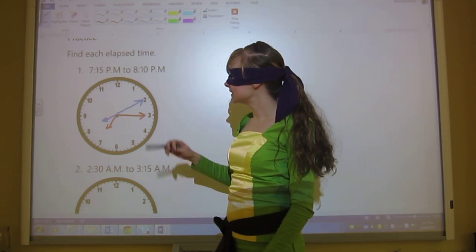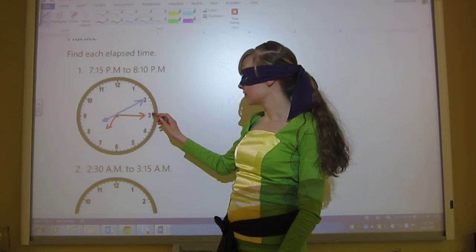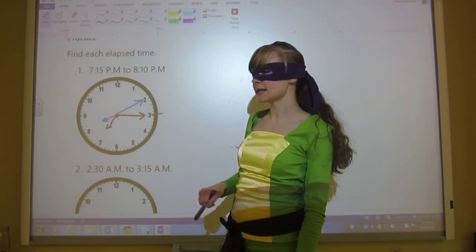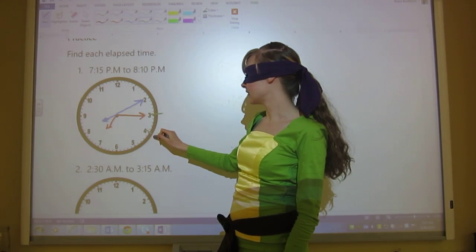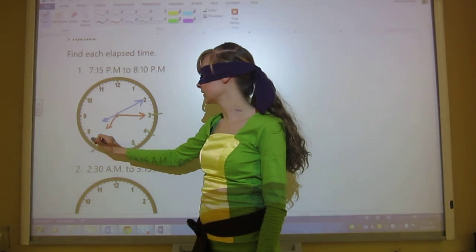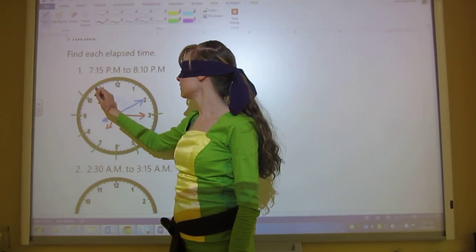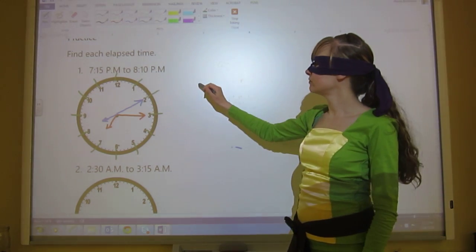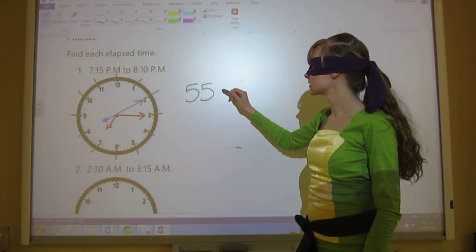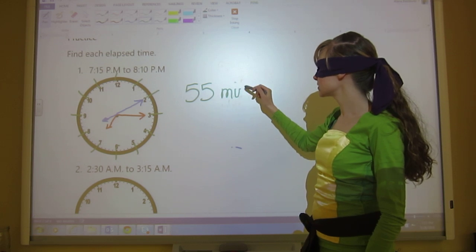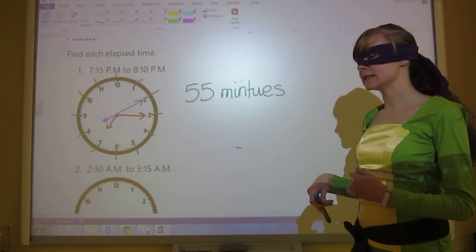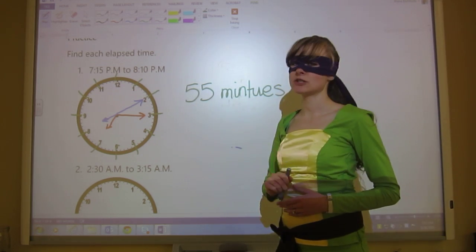So now what I need to do is I need to skip count by fives from the first one all the way around to the second one. So this one starts at zero minutes, then 5, 10, 15, 20, 25, 30, 35, 40, 45, 50, 55. So 55 minutes, 55 minutes has elapsed in question one.